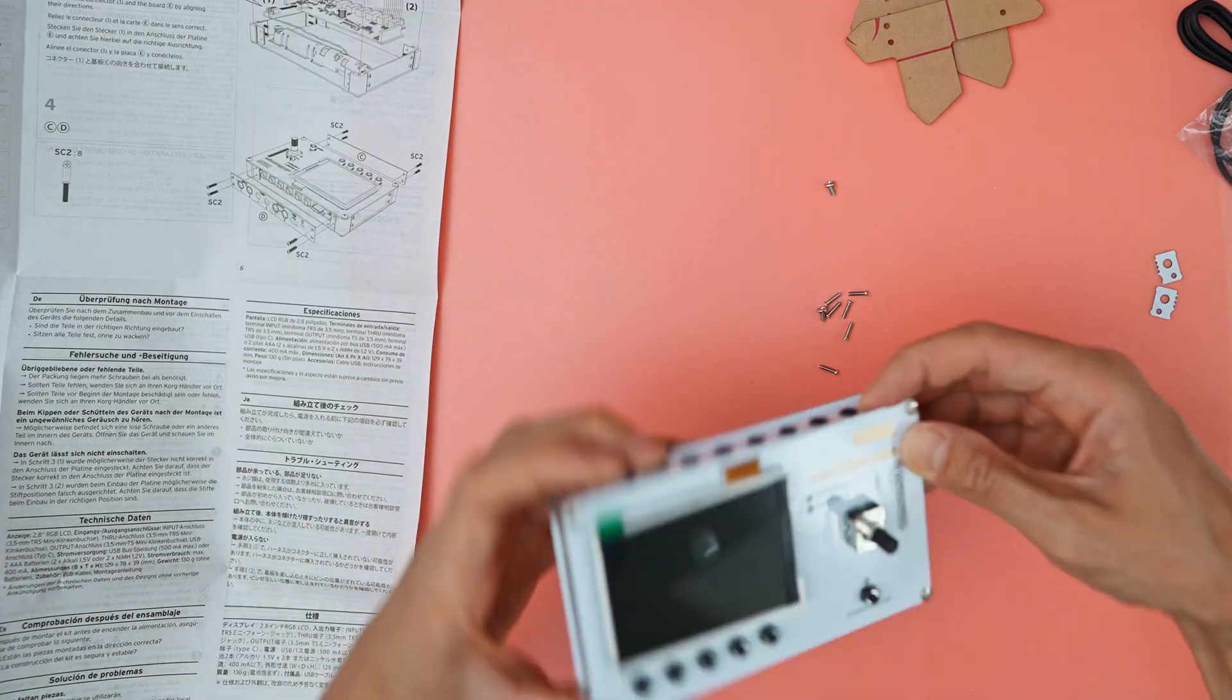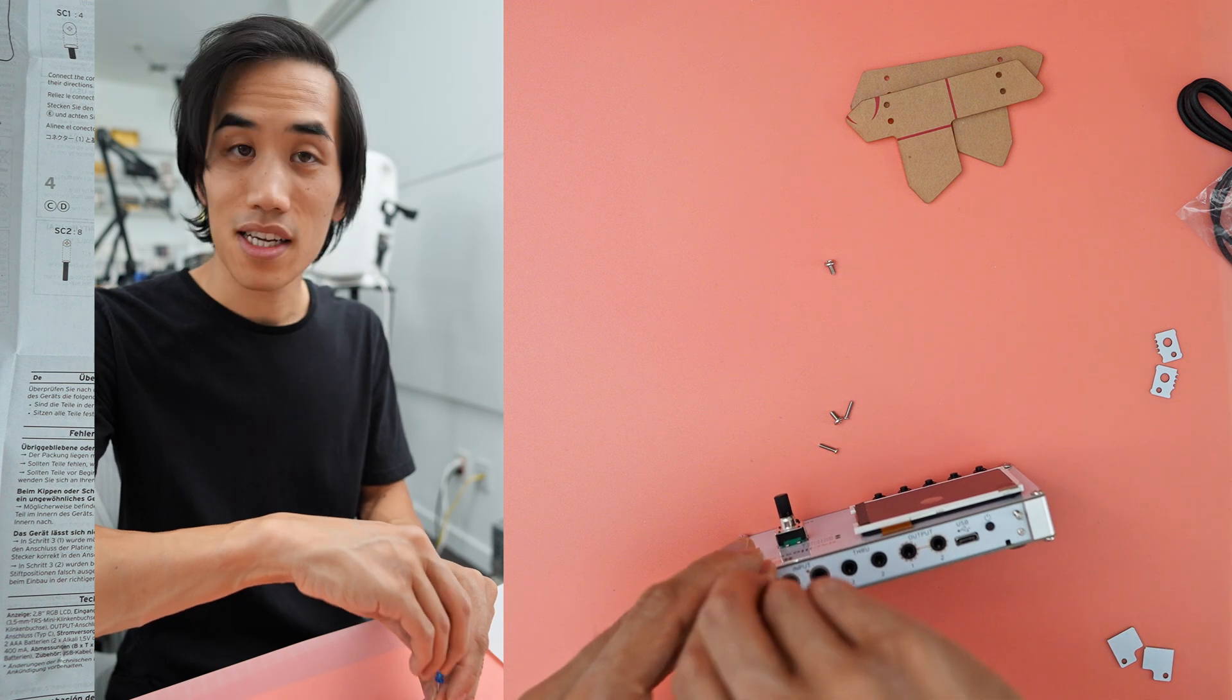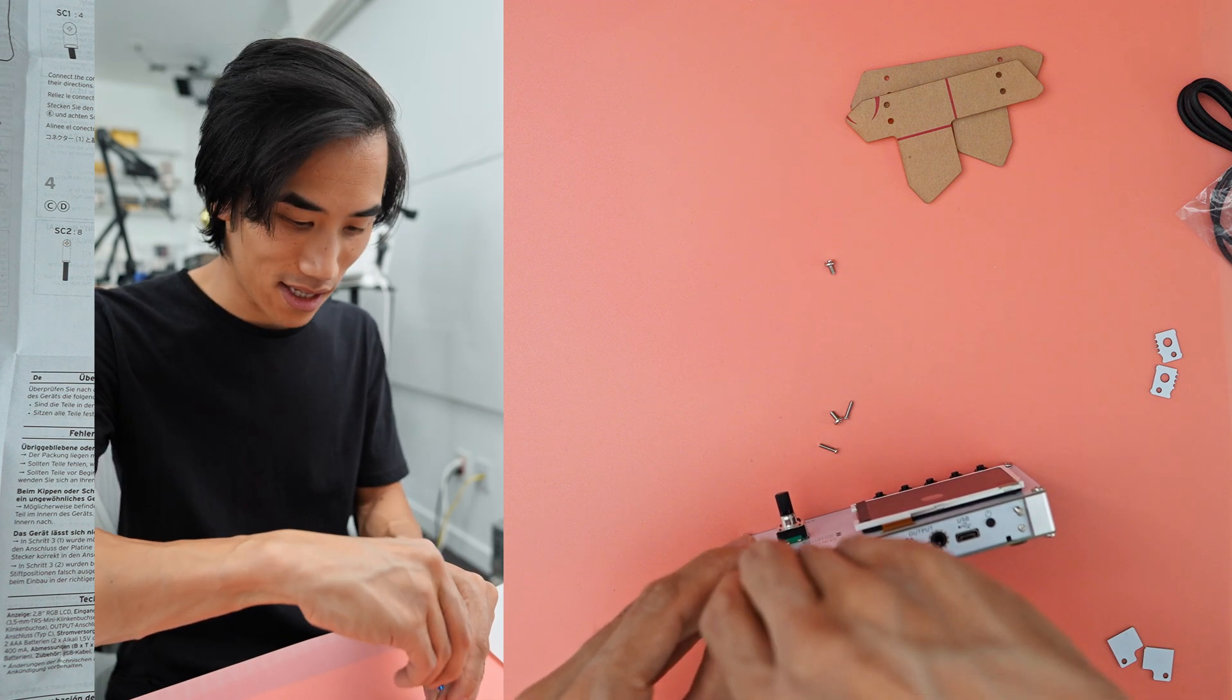Oh yeah. Yeah, now it's looking real. I like how in the manual, instead of calling these big screws and small screws, they're called SC1 and SC2.